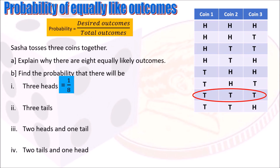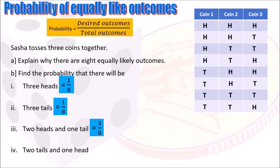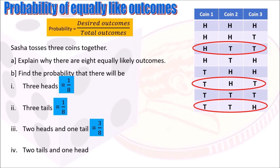The probability of three tails: there is only one outcome with TTT, so that is 1 out of 8, or one-eighth. The probability of two heads and one tail in any order: there are three possibilities — HHT, HTH, and THH — so that is 3 out of 8, or three-eighths. The probability of two tails and one head: there are also three outcomes — HTT, THT, and TTH — so that is 3 out of 8, or three-eighths.